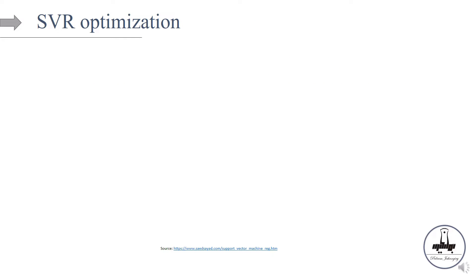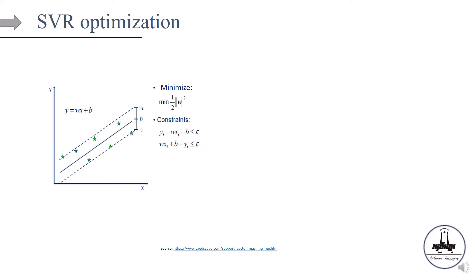The SVR optimization is pretty much like the optimization we saw for classification. We're trying to maximize the margin, and maximizing the margin is equivalent to minimizing a monotone function of weights. We use one-half times the weights squared — this is just for mathematical convenience because when we take the derivative, the terms cancel. The constraints are that all observations in the train set must be within the margin, defined by epsilon.